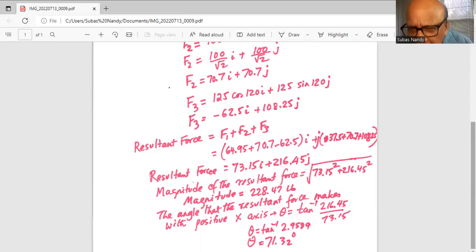37.5 plus 70.7 plus 108.25. So the resultant force is 73.15i plus 216.45j.